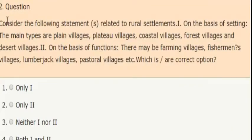Next question: consider the following statements related to rural settlements. First statement, on the basis of setting, the main types are plain villages, plateau villages, coastal villages, forest villages and desert villages. Second statement, on the basis of function, there may be farming villages, fishermen's villages, lumberjack villages, pastoral villages, etc. Which of the statements are correct? Options are: only 1, only 2, neither 1 nor 2, both 1 and 2. The correct answer is option 4. Both 1 and 2 statements are correct.